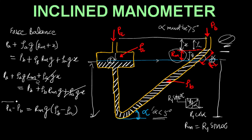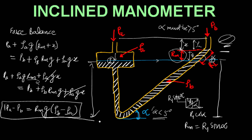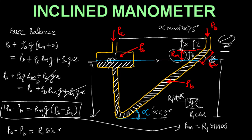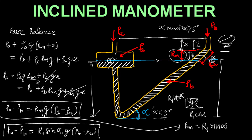This delta P is our pressure difference across the differential manometer. Since RM is not a standard value, we substitute RM equals R1 sin(alpha). So the final result is: PA minus PB equals R1 sin(alpha) into g into (rho_B minus rho_A). This is the answer after getting the pressure balance on inclined manometer. This formula is very important — always remember the concept, not just the formula, because you can derive it easily in the exam. This is also very important from the GATE exam point of view. This is all about inclined manometer — hope you like it. Please do share and subscribe.